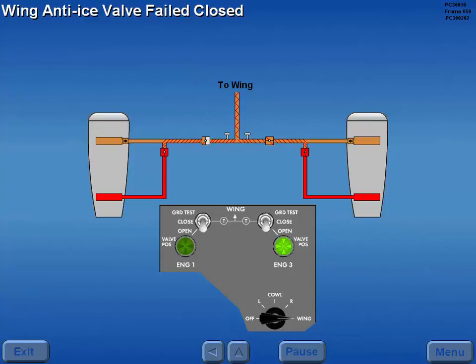Should a wing anti-ice valve fail to open, the valve position light remains extinguished, indicating a valve switch position disagreement. If a wing anti-ice valve fails to close, the valve position light will also remain extinguished due to the valve switch position disagreement.